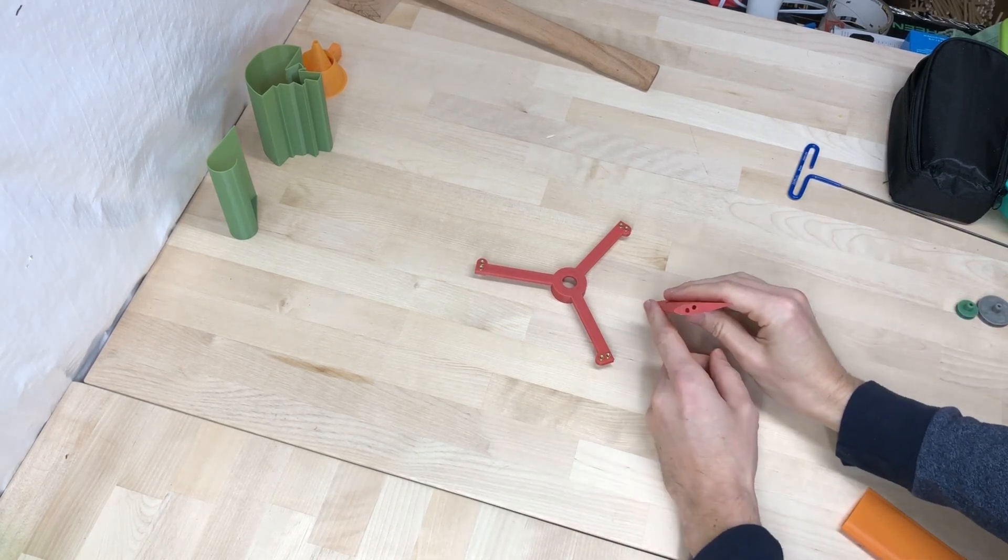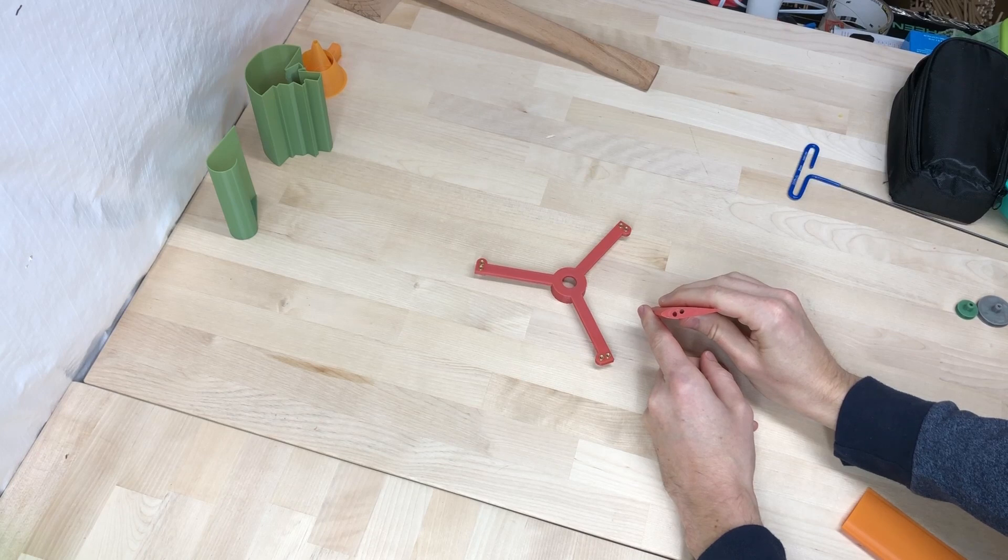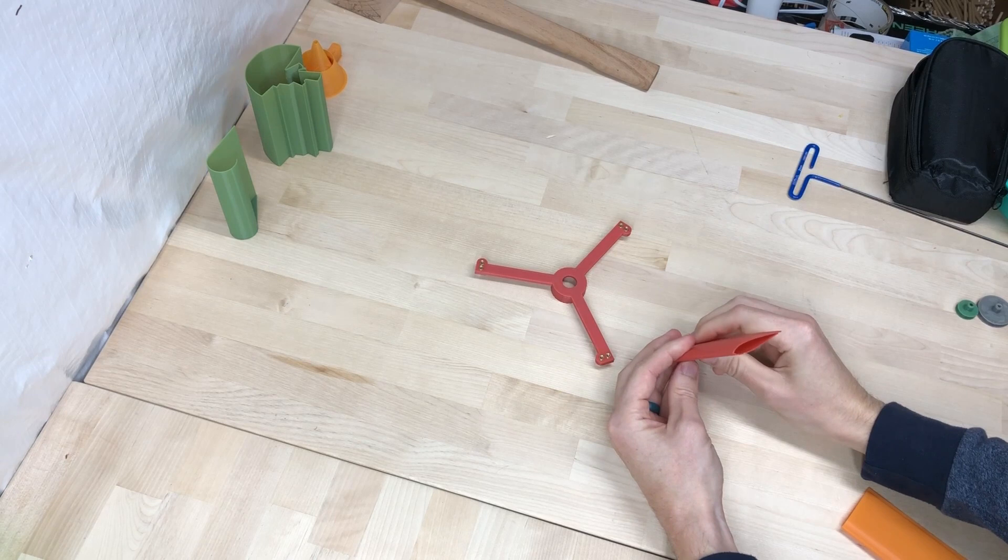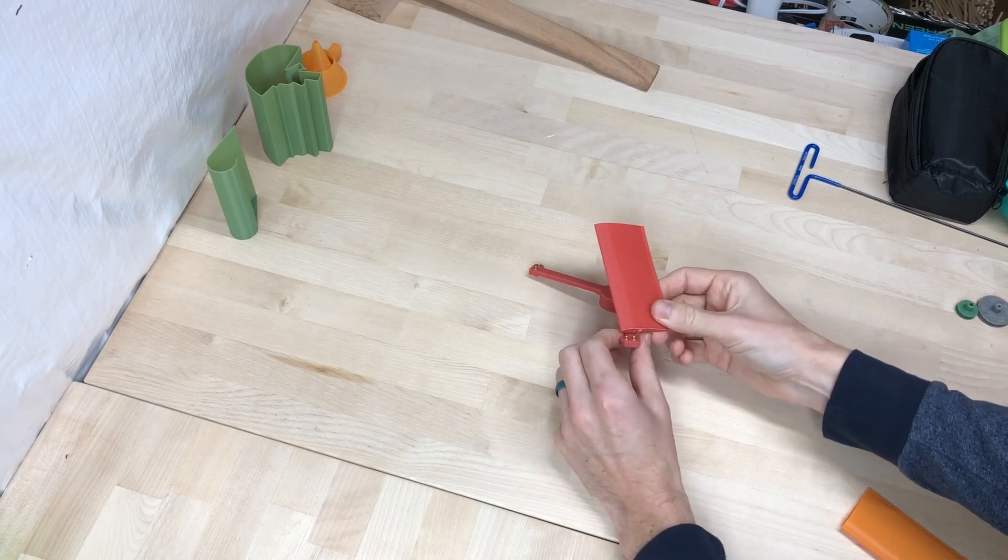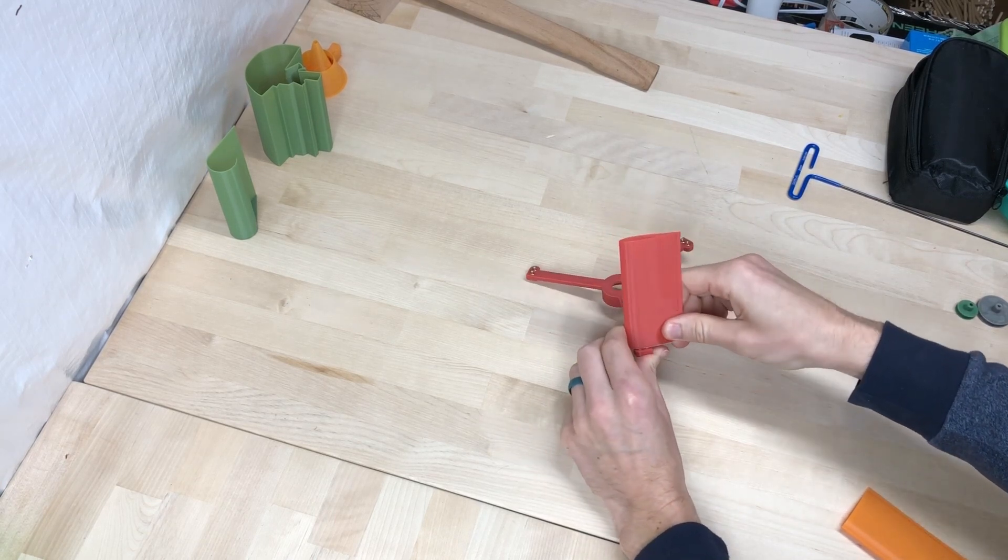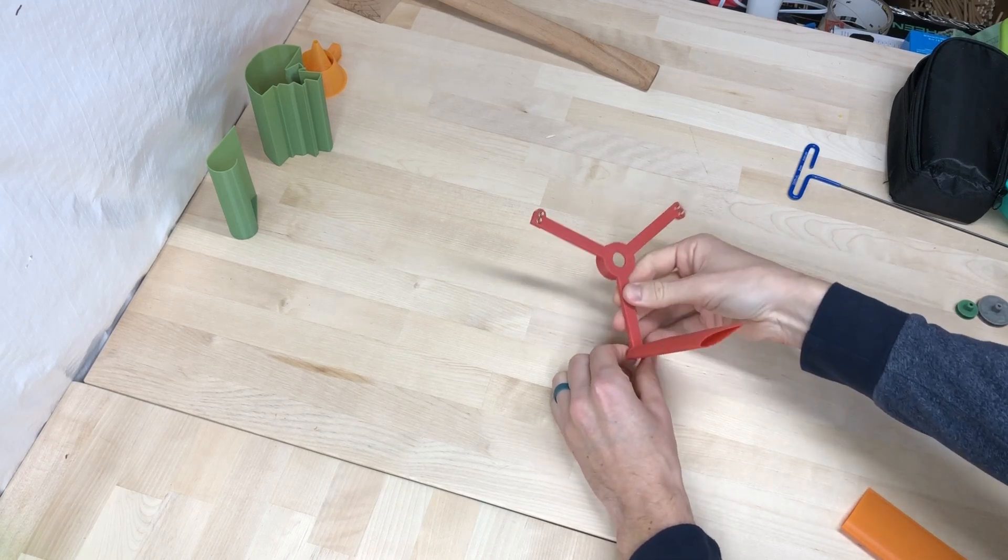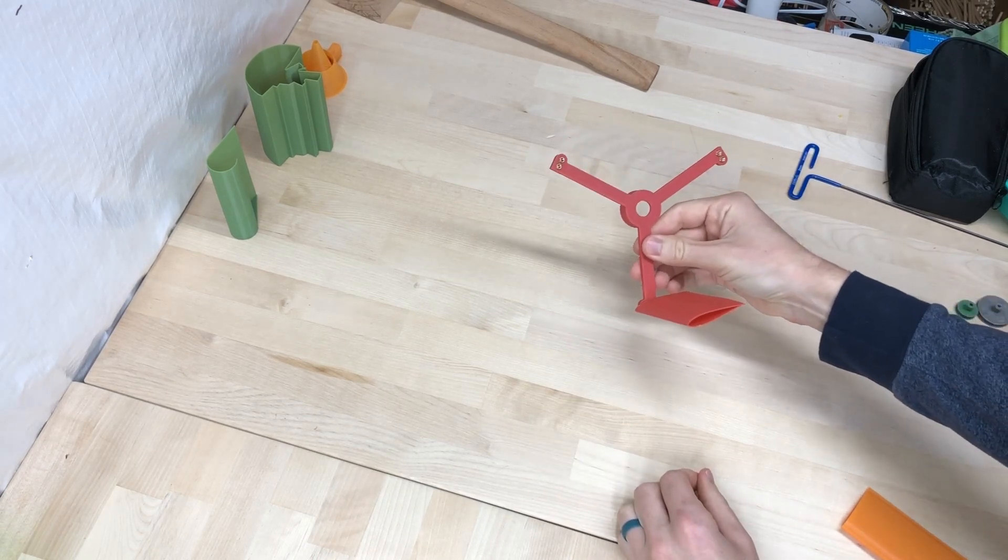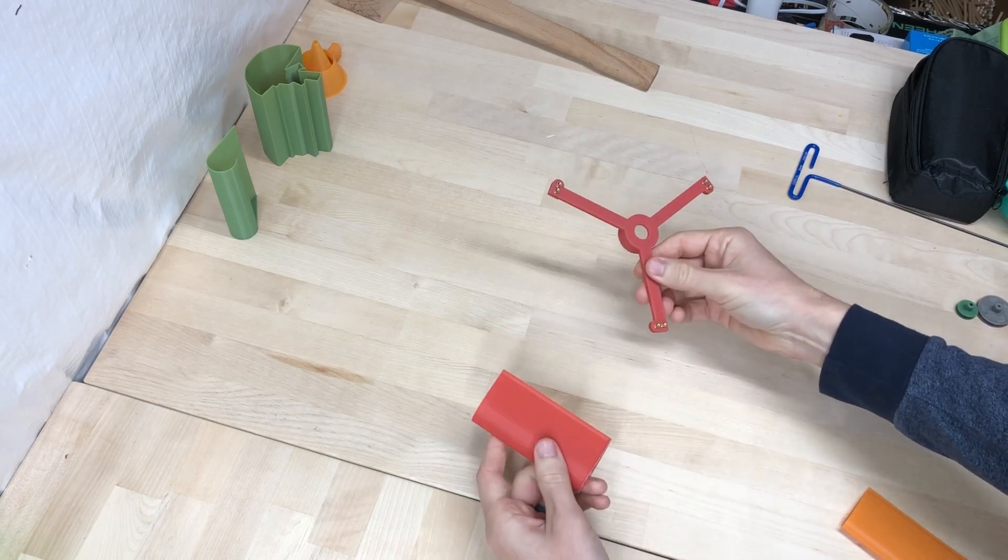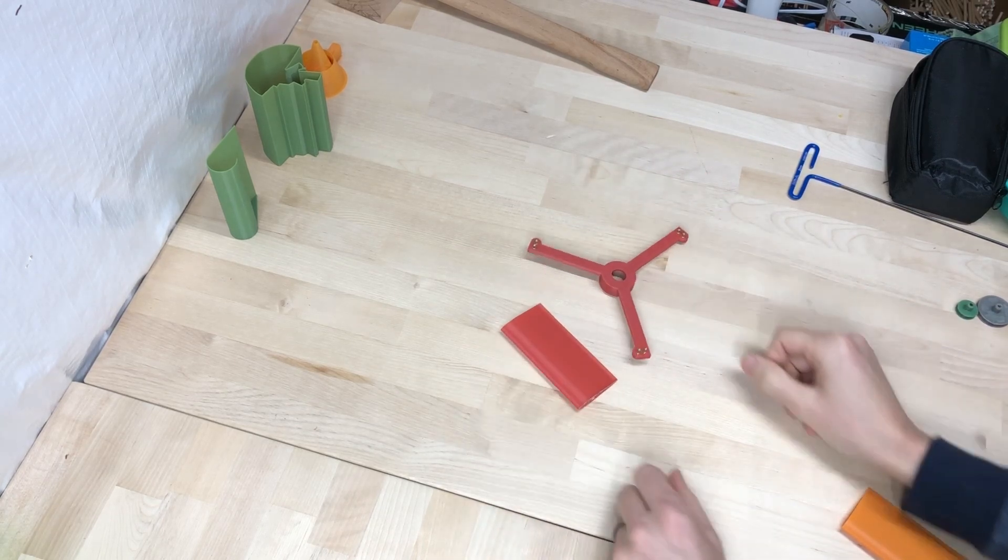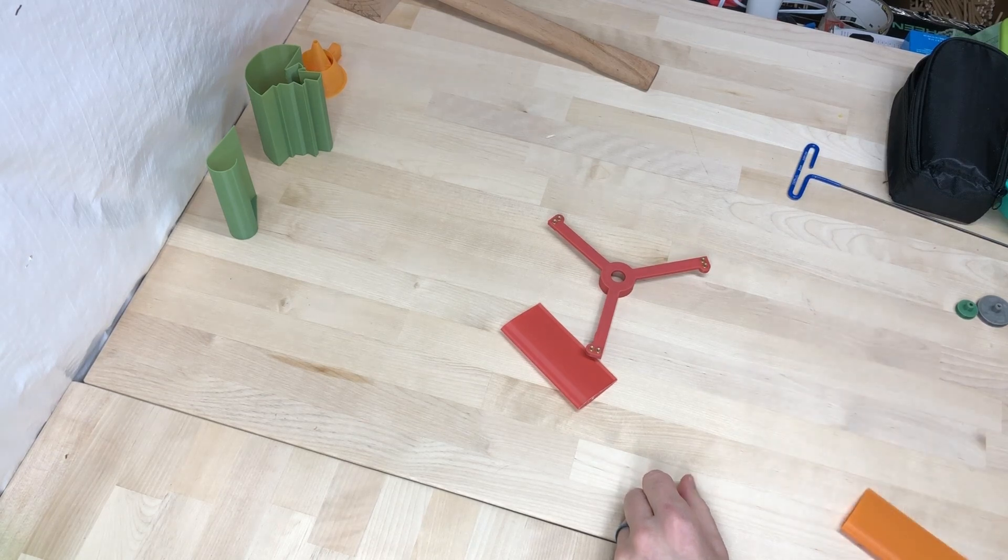So I went ahead and after reading that paper, I put a 16-degree angle on this airfoil relative to its spoke on the hub. You can see here it's no longer perpendicular. Yeah, maybe that'll work. Let's see if it works.